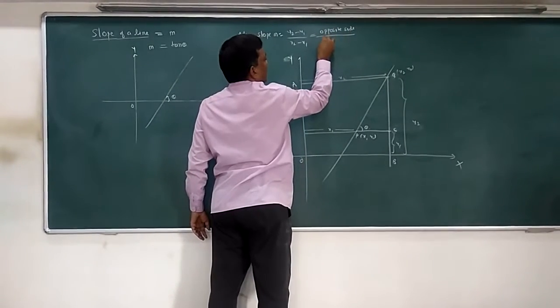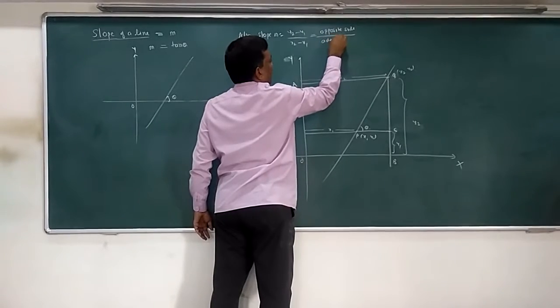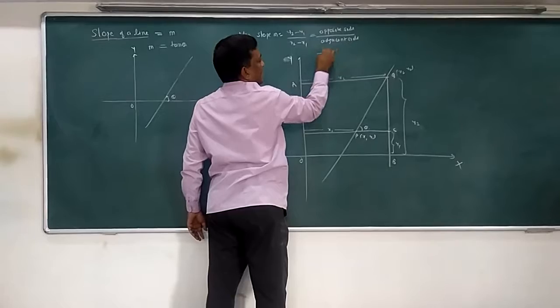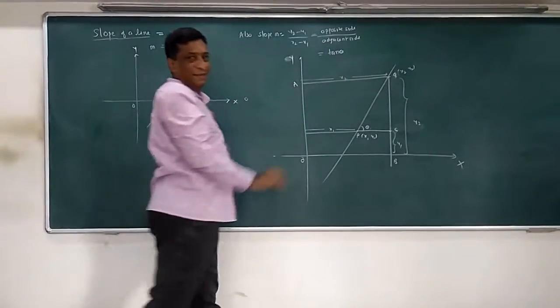and x2 minus x1 is nothing but adjacent side. From your school days, you know what is opposite side upon adjacent side, that is tan theta. So basically they are the same.